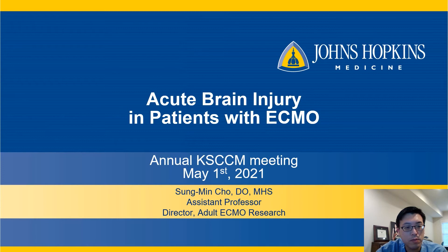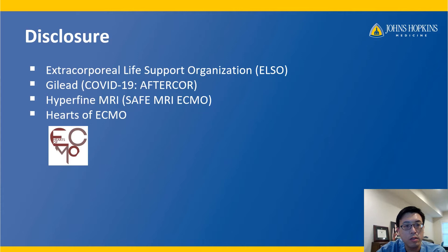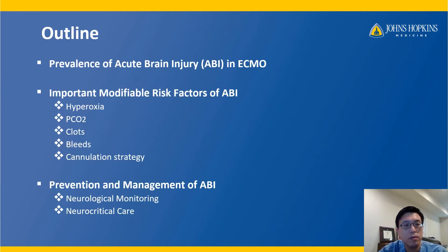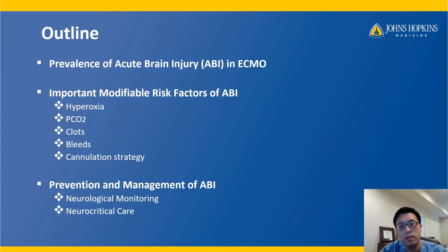Hello. Thank you so much for the invitation, KSCCM. I'll be talking about acute brain injury in patients with ECMO. These are my disclosures. The outline for today: first, we'll talk about prevalence of acute brain injury (ABI) in ECMO; then discuss modifiable risk factors of ABI in ECMO population; and lastly, we'll talk about prevention and how to manage these patients when they have ABI.